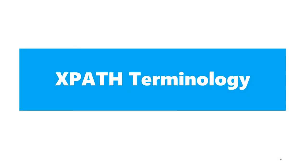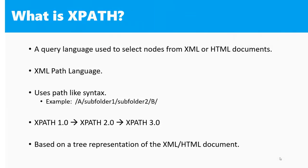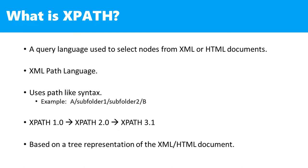Along with other selectors like CSS, XPath has become the most powerful query language used by web scrapers to select nodes from an XML or HTML document. It stands for XML Path Language and uses path-like syntax to traverse the DOM. For example, on your operating system when you navigate from folder A to folder B, you pass through some subfolders separated by a slash. This path syntax is pretty similar to the one used by XPath.